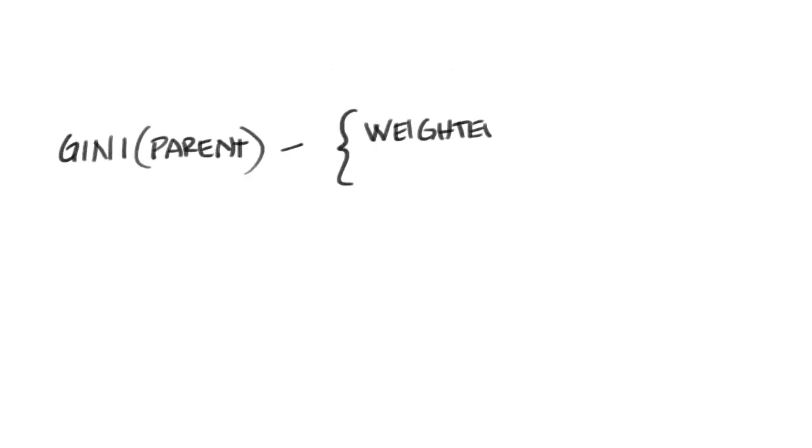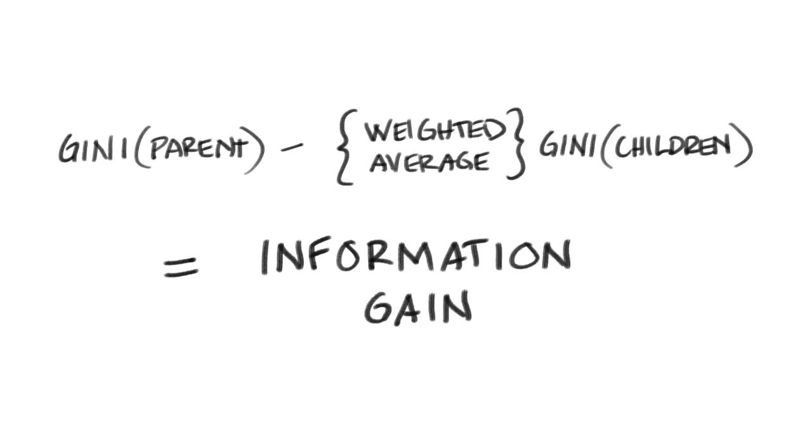Information gain helps us find the question that reduces our uncertainty the most. It is just a number that tells us how much a question helps to unmix the labels at a node.